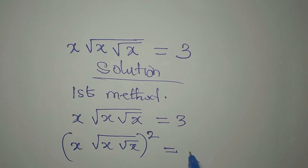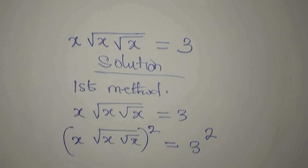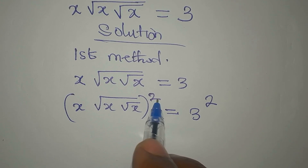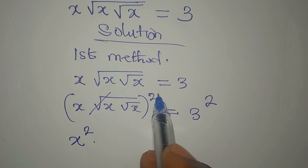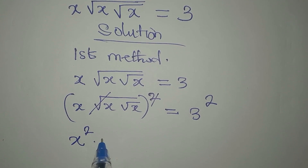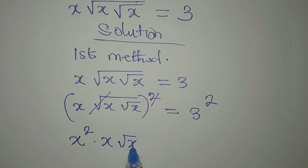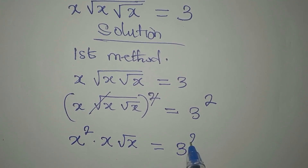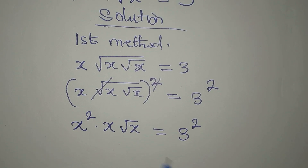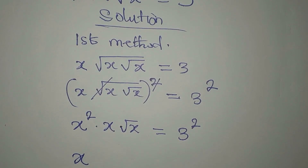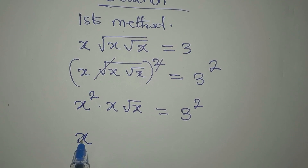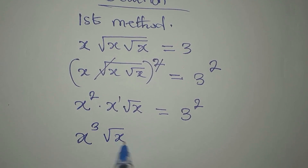Squaring everything means we also square the 3. This x will take this square, so we have x squared, then we multiply by the next term. That x comes out, and we multiply by root x, so everything equals 3 to the power of 2. Now, before removing the remaining root, we multiply these two terms first. Picking one base, we get x, and since there's an invisible power of 1, 1 plus 2 gives us x to the power of 3, and we still have root x equal to 3 squared.